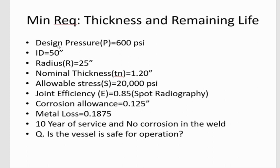In our case we have a pressure vessel whose details are given right here. The design pressure is 600 psi, inner diameter is 50 inches, which means radius is 25 inches. Nominal thickness t_n is 1.20 inches, allowable stress is 20,000 psi, joint efficiency is 0.85 — meaning only spot radiographic examination was done — and corrosion allowance is 0.125 inches.